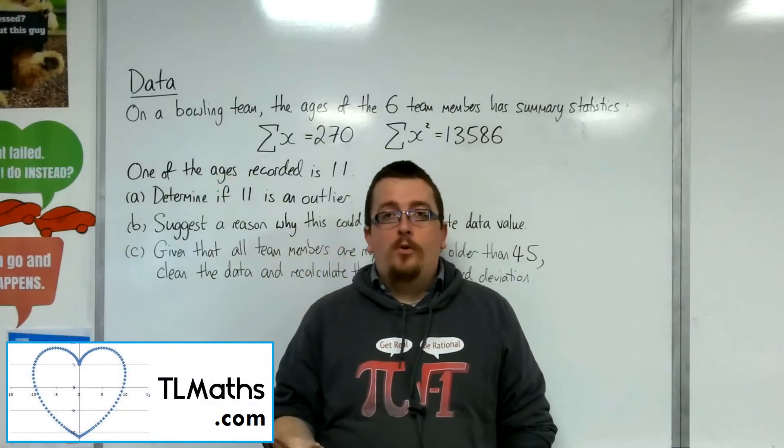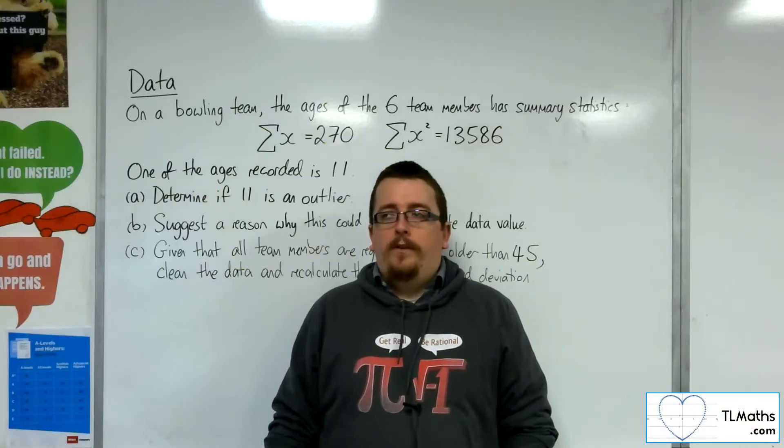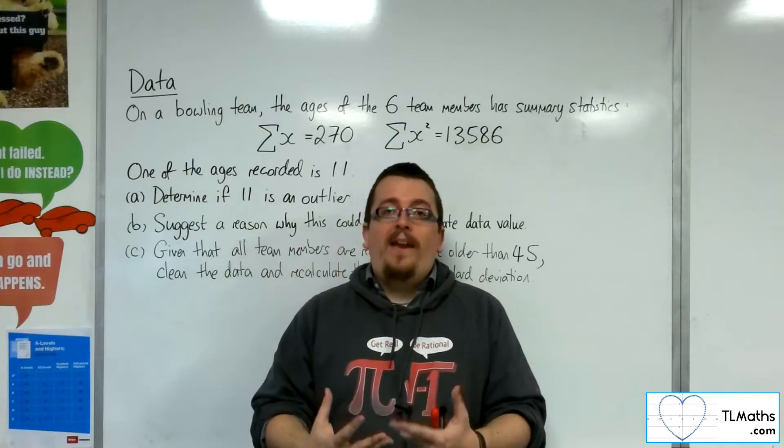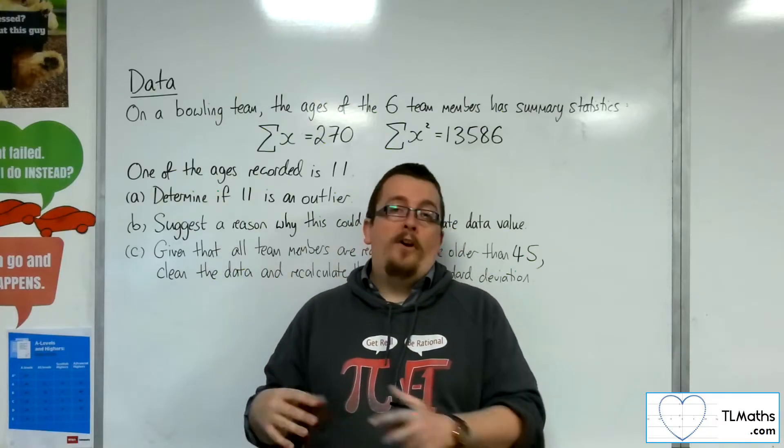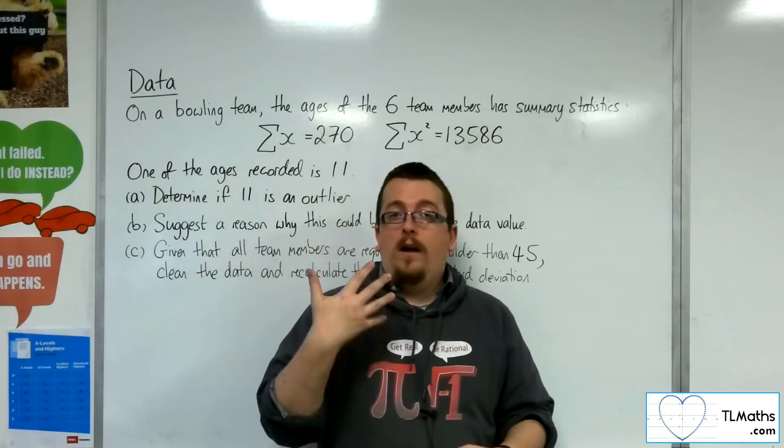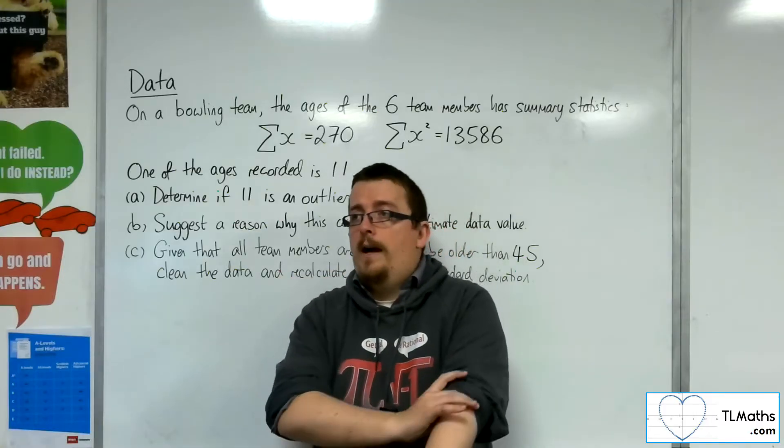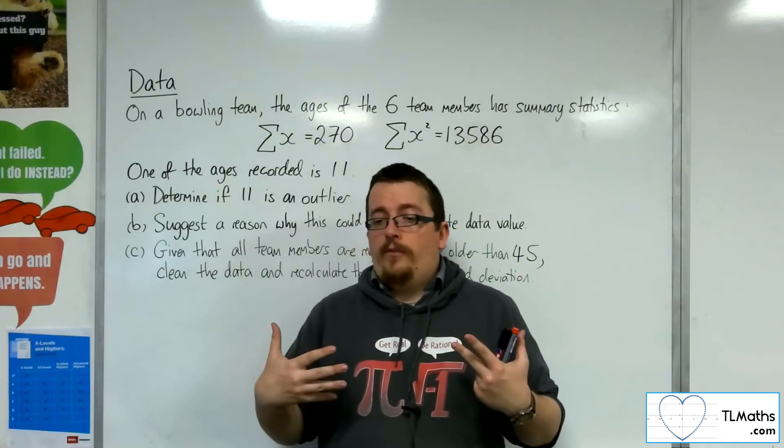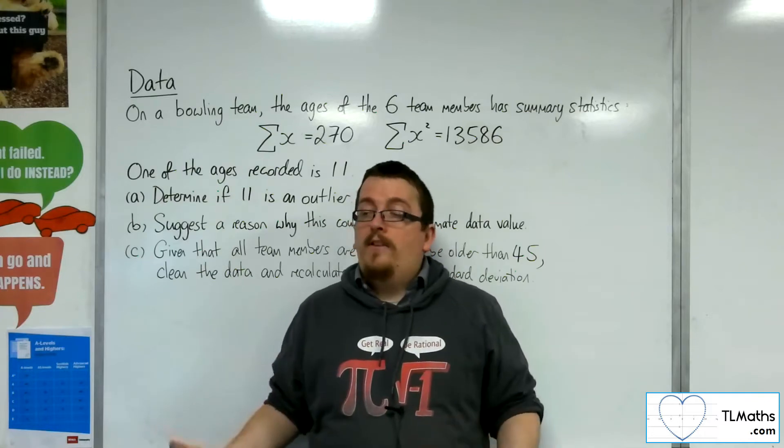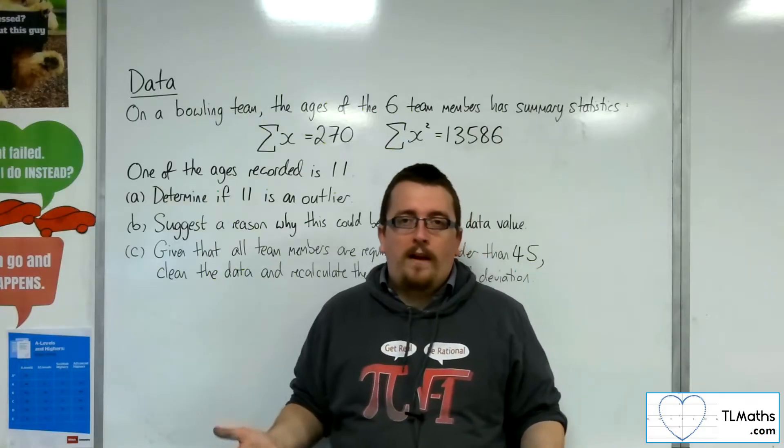So when we record data, there can always be human error to contend with. What I mean by that is when we gather data together and I'm going to type it into a computer, for example, my hand might slip and I might accidentally type in a figure that is incorrect. In some cases, this may be picked up because it is obviously wrong. In some cases, it might not be picked up, but we've got to contend with that as we go.